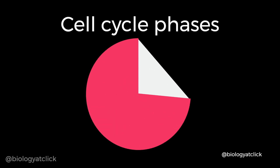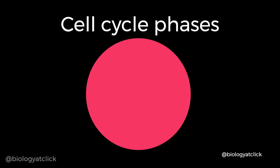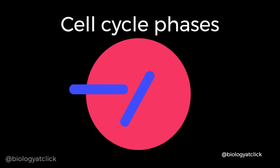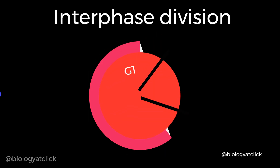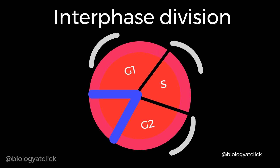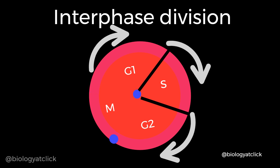The cell cycle is mainly divided into two phases: the dividing stage and the non-dividing stage. All cells spend most of their life in the non-dividing phase. The M phase represents the actual cell division phase, and the interphase is the non-dividing phase between two successive M phases. The interphase is comprised of G1, S and G2 phases, which is followed by the M or mitosis phase. The interphase is the preparatory phase that lasts 95% of the duration of the cell cycle.